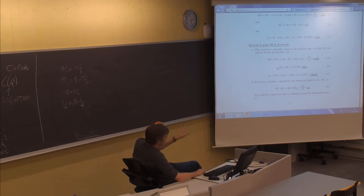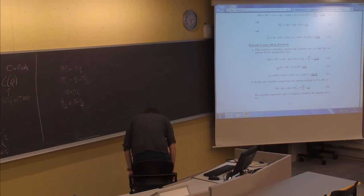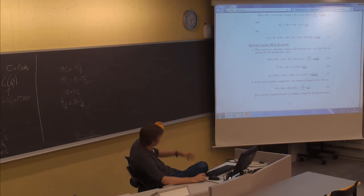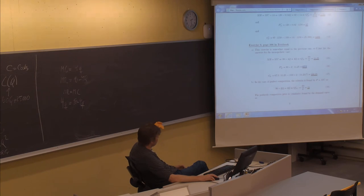The monopoly price is found by entering Q_m = 11.25 into the demand curve, which produces P = 67.5. The optimal profit is found by taking price times quantity — 67.5 times 11.25 — to get optimal revenue, and then we subtract costs by entering the optimal quantity into the cost function (100 plus 2q squared).